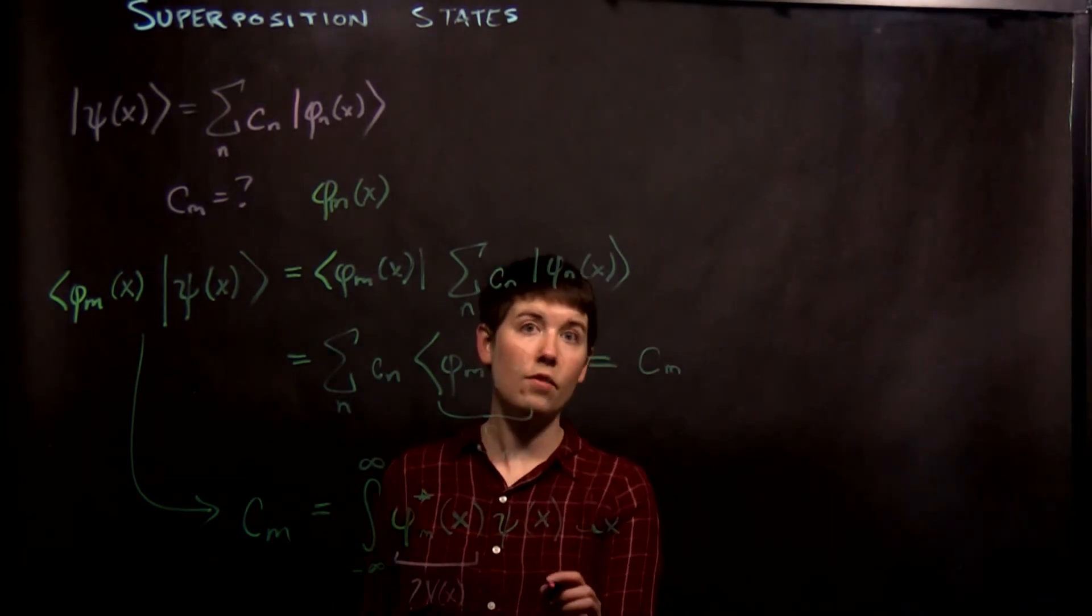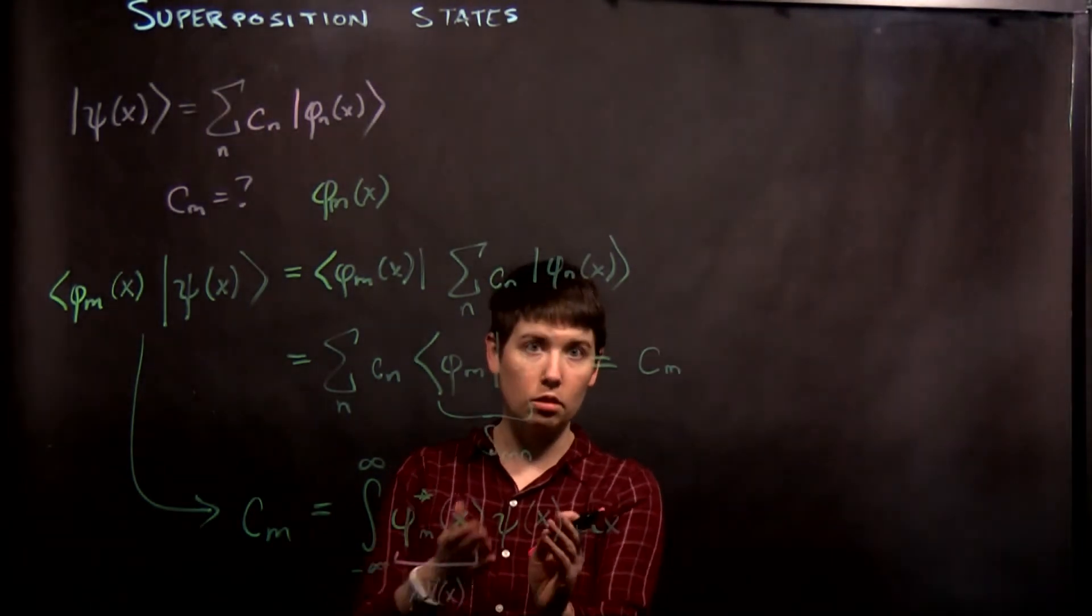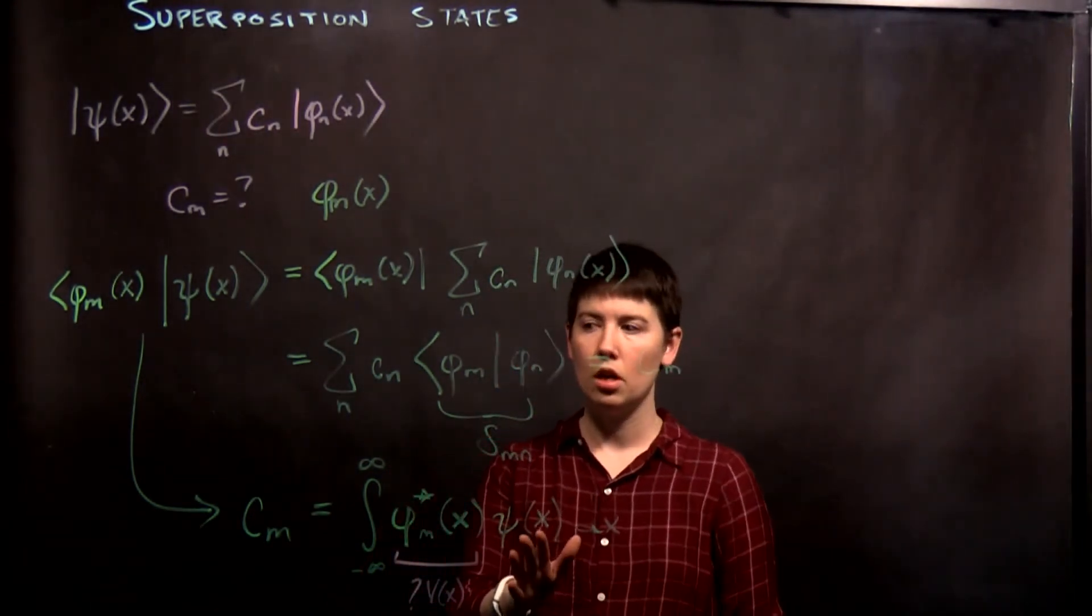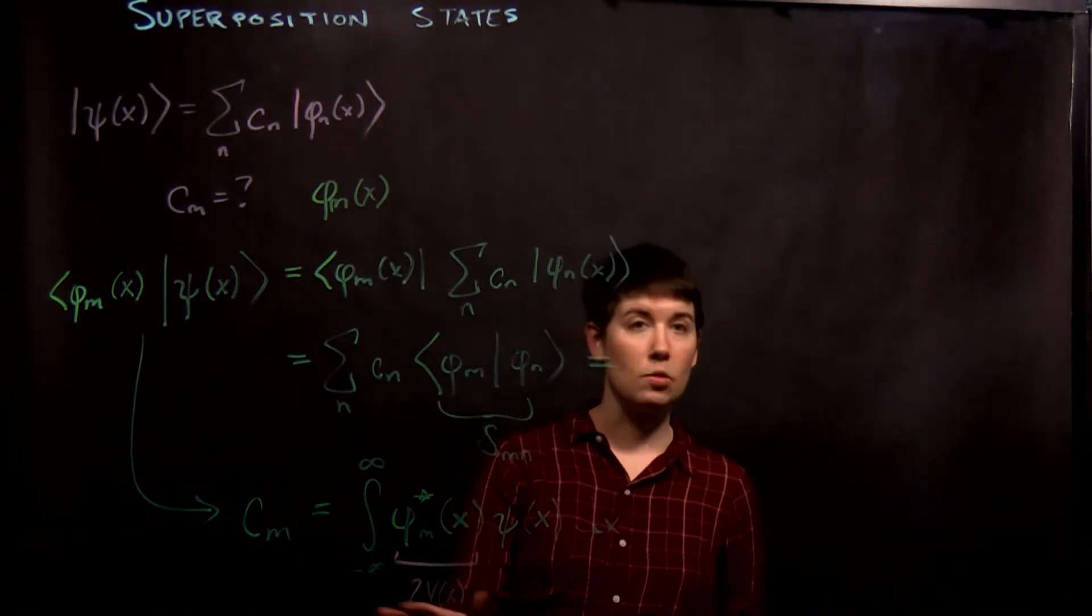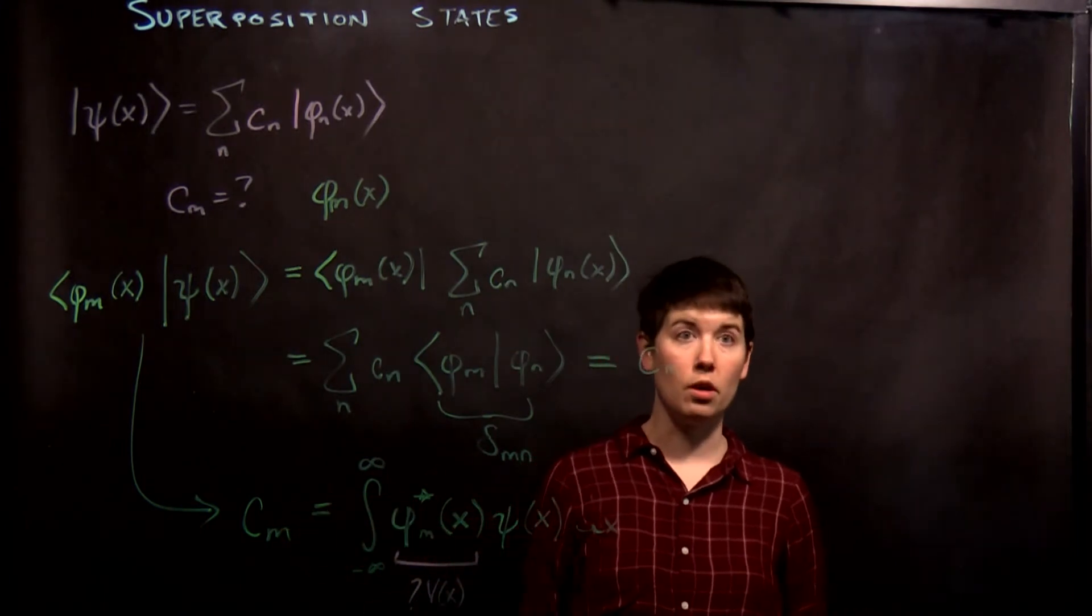And then this you literally have a functional form of, right? This is literally going to be some sort of function. And so from this you can then create this mathematical relationship for what c sub m are.